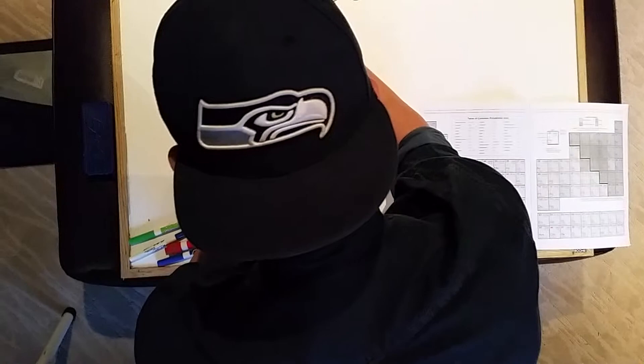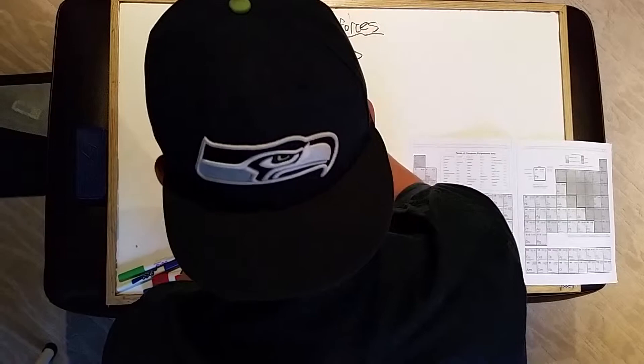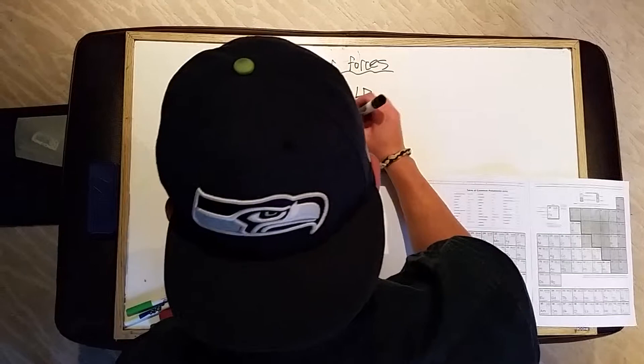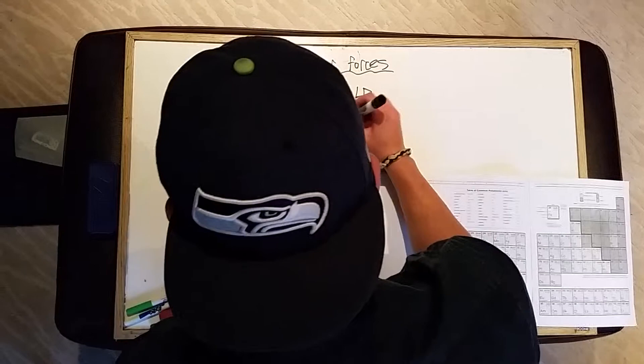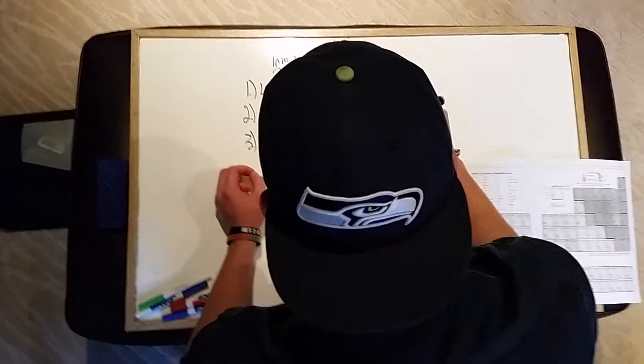The first type is called London dispersion — you can use the acronym LD to represent that. Two, dipole-dipole, DD to represent that. And three, hydrogen bonding, represented as H-bond.